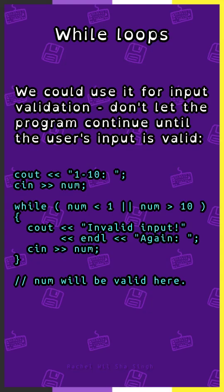We could use a while loop for input validation — don't let the program continue until the user's input is valid. So let's say we display 1 to 10 and get the user's input. We can say while num is less than 1 or num is greater than 10, then display invalid input and ask them to input it again. After the while loop, we will know that num is a valid value.